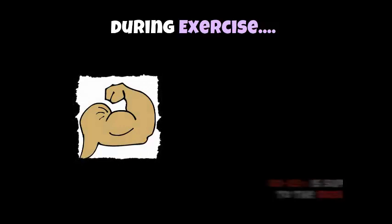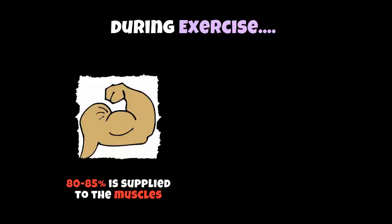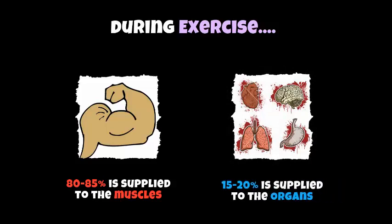During exercise, the vascular shunt redistributes blood to different parts of the body. As you start to sprint around during a game, 80 to 85% of blood is shifted to your muscles because we need it — we're moving, it takes priority. Only 15 to 20% is supplied to the organs, mainly the brain, because the brain needs to control those muscle actions being produced.